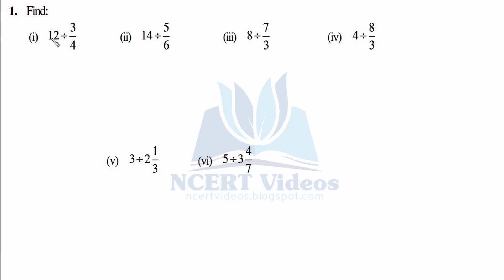Question 1: find the answer to these division problems. First: 12 divided by 3/4. Second: 14 divided by 5/6. Third: 8 divided by 7/3. Fourth: 4 divided by 8/3. Fifth: 3 divided by 2 and 1/3. The last one is 5 divided by 3 and 4/7.